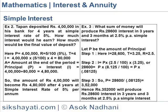R = 2.5% per annum. Step 2: I = P × (2.5/100) × 3.25. So 28,600 = P × (8.125/100). Step 3: P = 28,600 ÷ 0.08125 = 3,52,000.